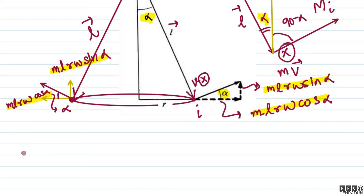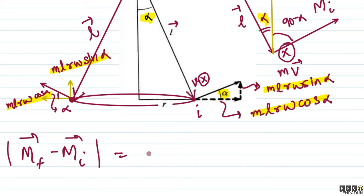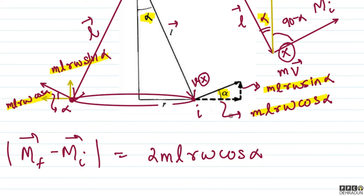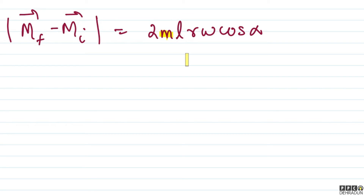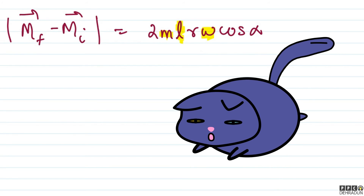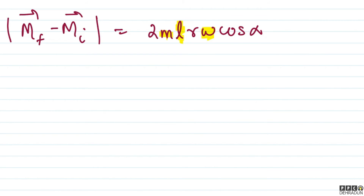To find the increment, we compute MF vector minus MI vector. The z-components cancel out since they didn't change. The radial components, which were equal and opposite, give a difference of twice mLr omega cos alpha. So the magnitude of delta M is 2mLr omega cos alpha. However, r and alpha were introduced by us — the given quantities are only m, l, and omega — so we need to eliminate them.